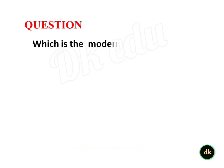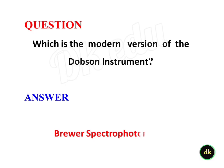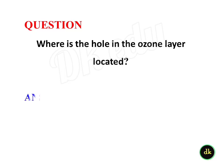Which is the modern version of the Dobson instrument? Brewer spectrophotometer. Where is the hole in the ozone layer? Antarctica.